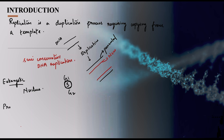In prokaryotes, which do not have a true nucleus, replication takes place in the cytoplasm itself. DNA replication is a complex, multi-step process that involves many enzymes, protein factors, and metal ions, making it a little tedious to understand.